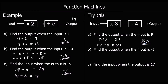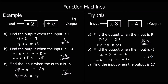So the output is 23. Find the output when the input is negative 2. So we're going to put negative 2 in. Negative 2 times 3 is negative 6. And then take away 4: negative 6 take away 4 is negative 10. So the output is negative 10.